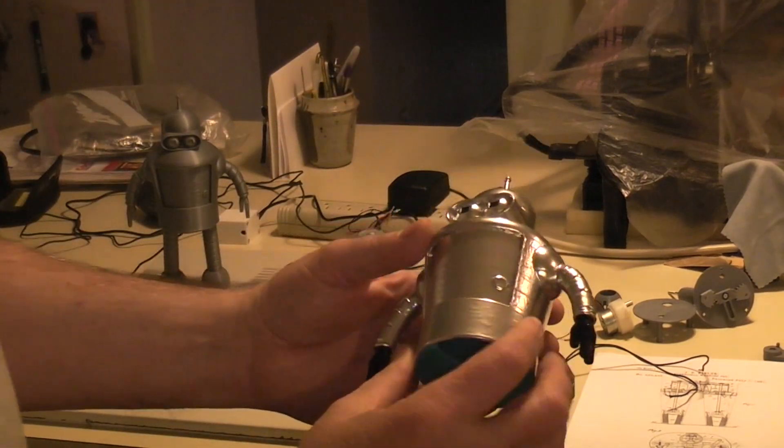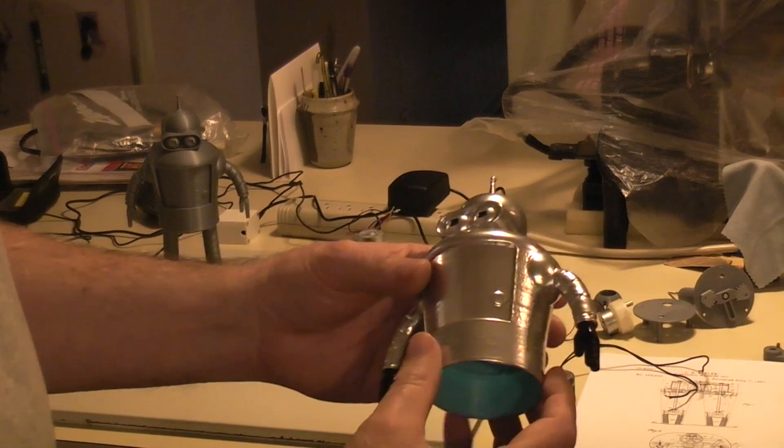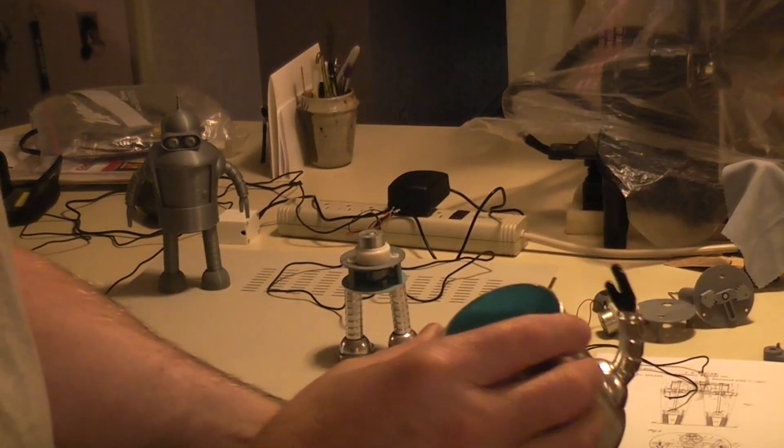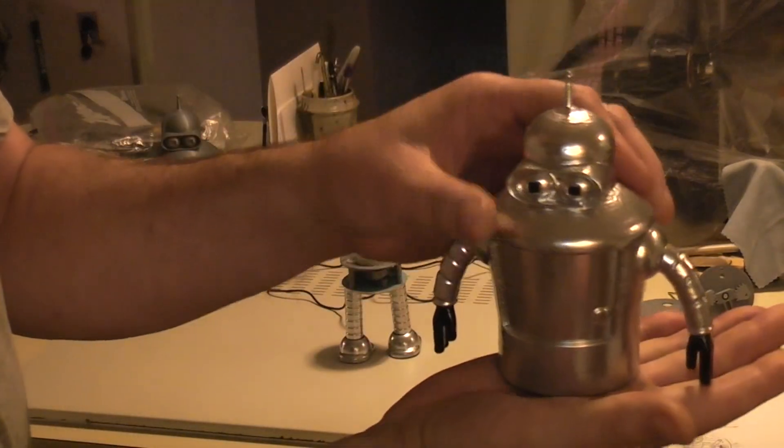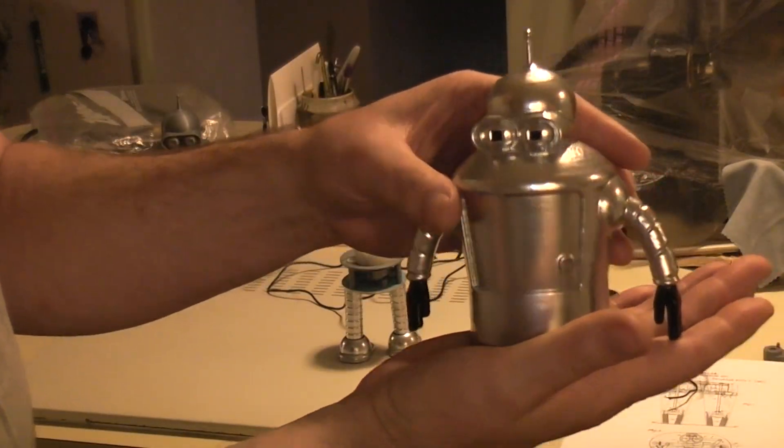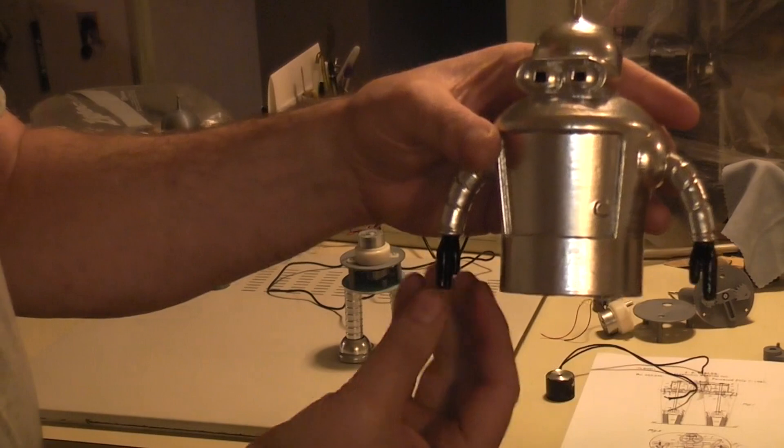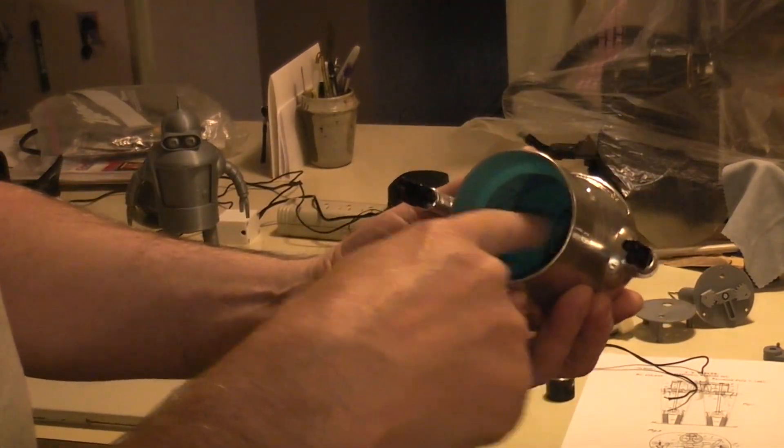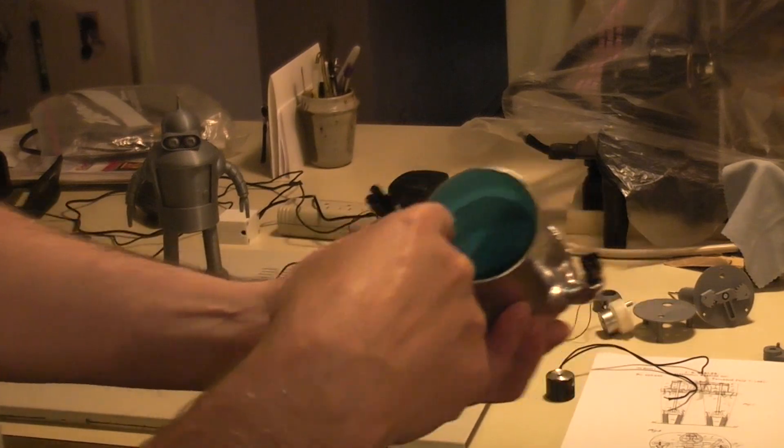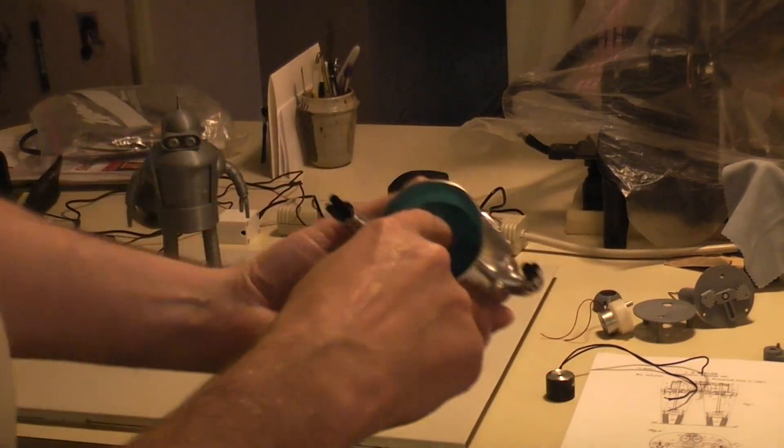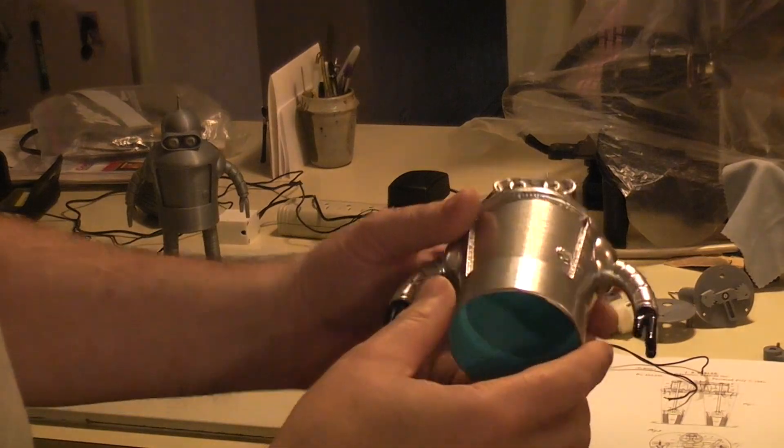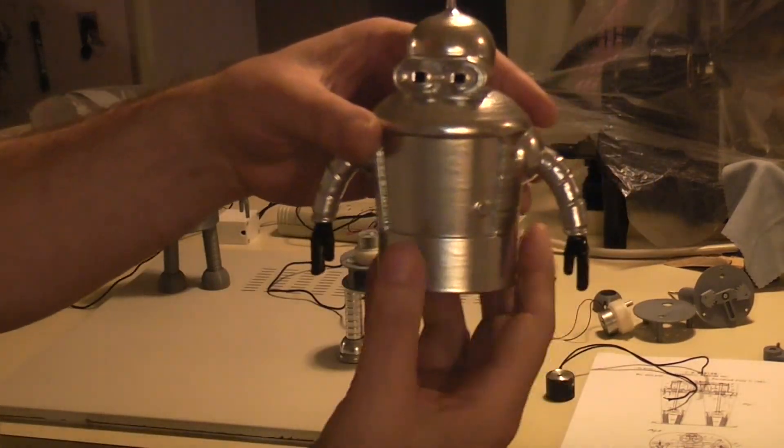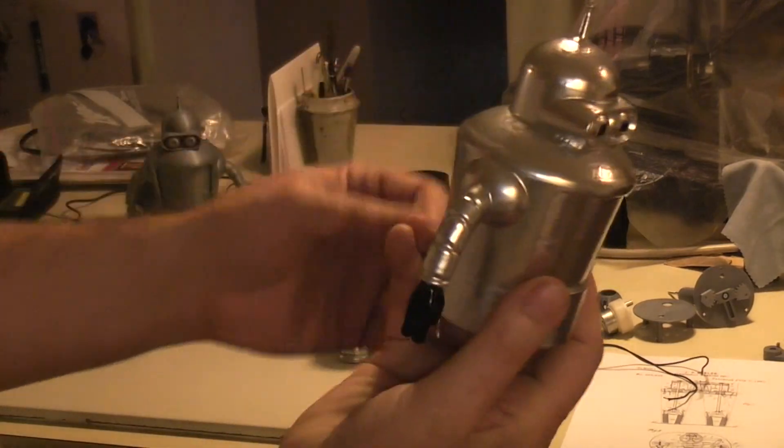The entire top of the body is just a kit bash off of Thingiverse - I'll put links to all the STL files. This body prints as one piece sitting like this, and the only supports required are just around the hands. You don't need any supports in here. I have it print two layers where there's a lip that sits on here, and you just cut that out with an X-Acto knife afterwards. Because there's two layers there, you can bridge that so you don't need to put a bunch of fill and waste time.